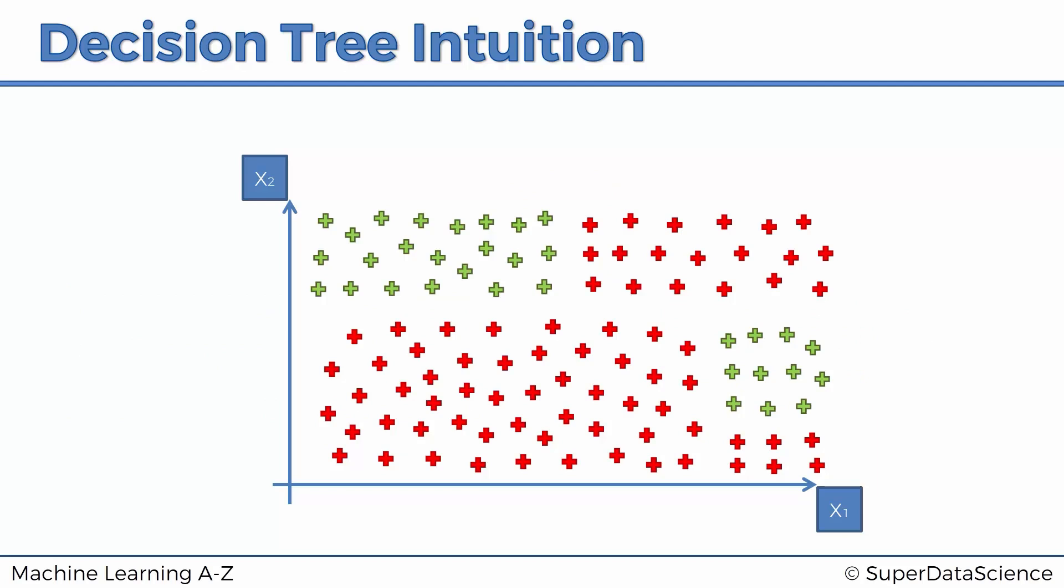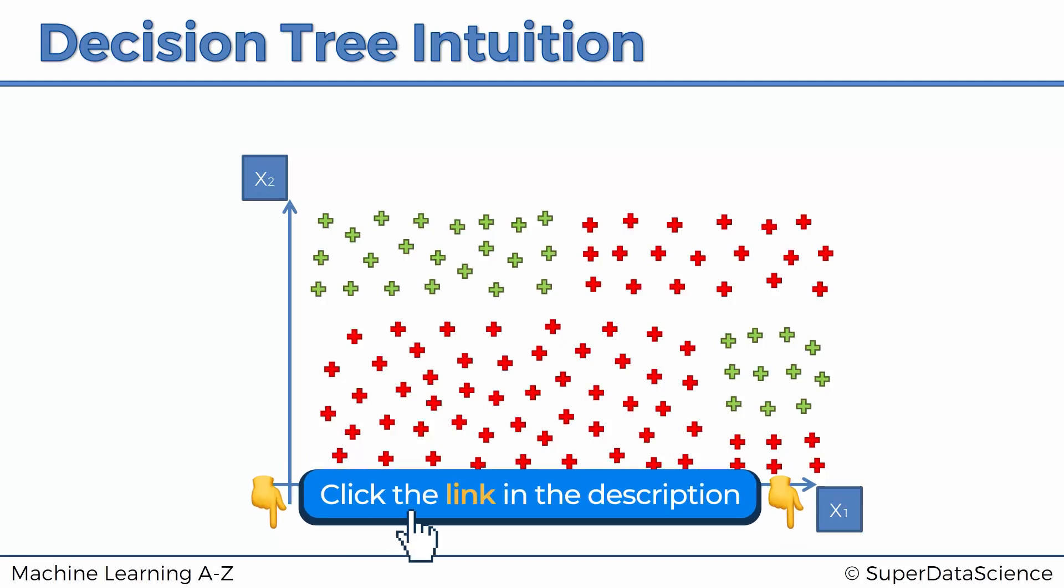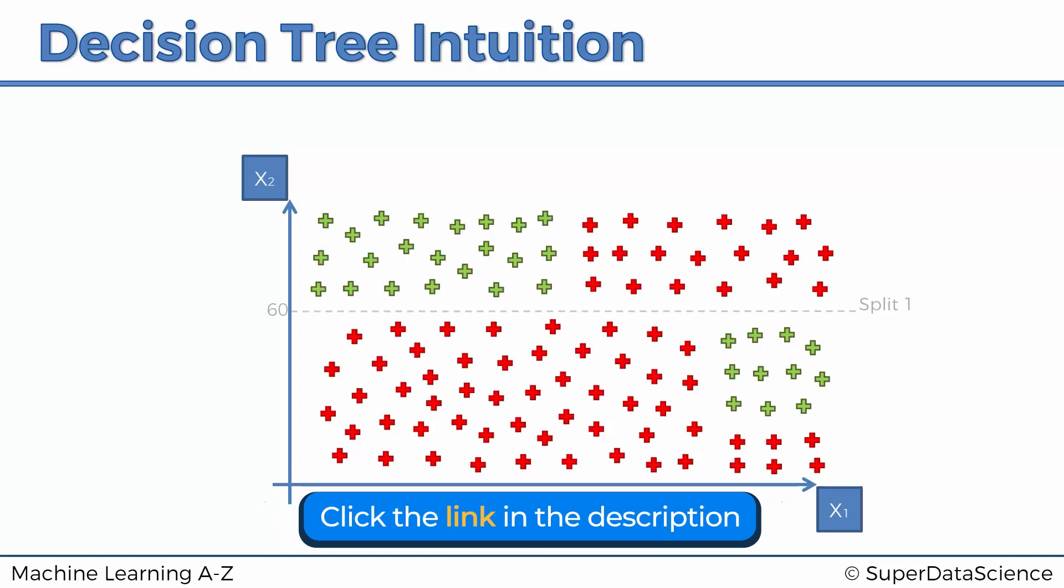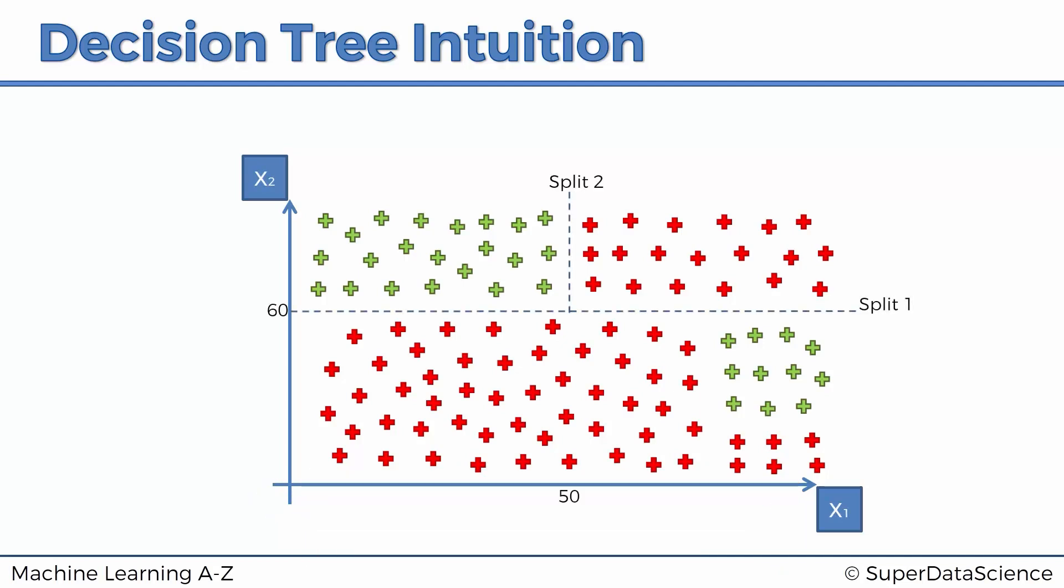So here we've got an example with lots of points on our two-dimensional scatter plot. How does a decision tree work? It's going to cut it up into slices in several iterations. There'll be split one, split two. Split one split our data at x2 equals 60. Split two split our data at x1 equals 50. Split three split our data at x2, about 20.